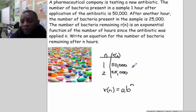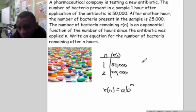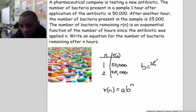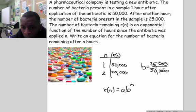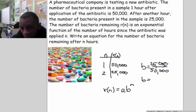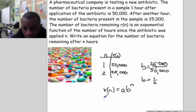We do know how to find b, our constant ratio. We take successive output values: 25,000 divided by 50,000. The zeros cancel, giving us 25 over 50, which is one half. So our b is one half.